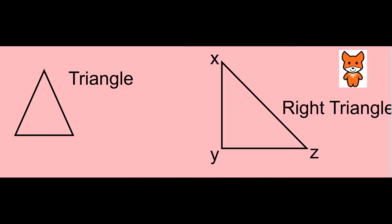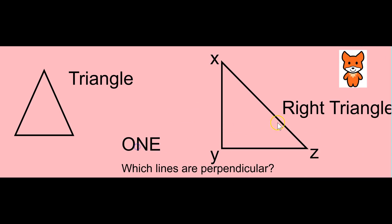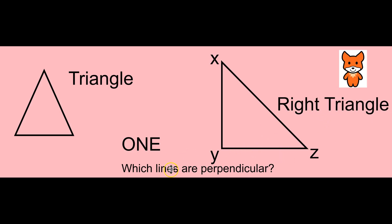How many right angles could you possibly include in a triangle? Only one. And that makes a right triangle. In a right triangle, two of our lines are perpendicular to each other. Line segment YX is perpendicular to line segment YZ.